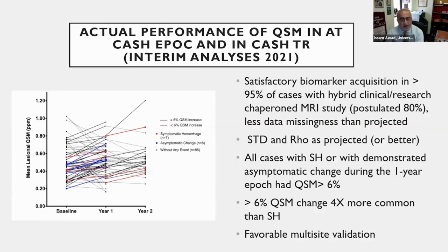This is data from our trial readiness and atorvastatin trial, and we are able to show a very satisfactory biomarker acquisition in these studies. The standard deviation across this large number of epochs is exactly as was projected in our pilot data. All cases with symptomatic hemorrhage — where we captured a clinical event — had a QSM that increased by more than six percent. We have many more cases with greater than six percent increase, showing a much more sensitive biomarker to bleeding in the brain, exactly as we would want.